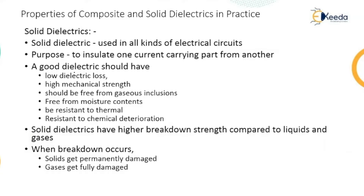A dielectric is best suitable when its dielectric loss is low, when it has high mechanical strength, when the solid insulating material is free from air or gas pockets — because gas pockets reduce the strength — and it must be free from moisture contents, as moisture reduces both the electrical and mechanical properties and overall breakdown strength.